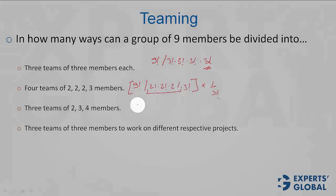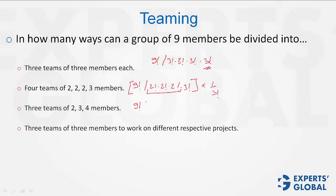3 teams of 2, 3, 4. Now see, the 3 teams are unique. They have different numbers of individuals. And therefore, this is the answer. You don't have to divide this with anything else.